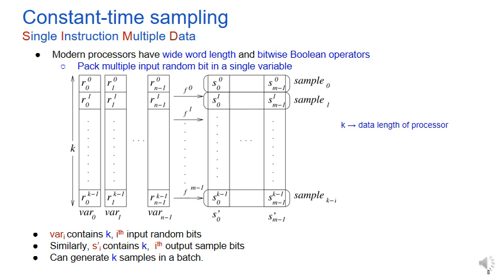Now we can unpack these variables to get the actual samples. In this way, we can generate k samples in a batch. Of course, this method has some overhead in packing and unpacking the bits, but that is very negligible.